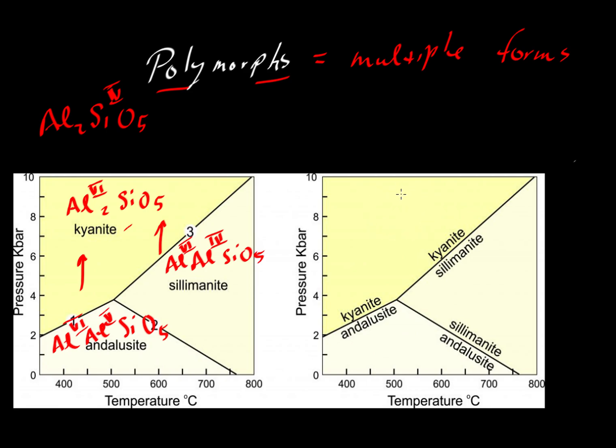We can take advantage of this double-paneled figure from Dexter Perkins' textbook to illustrate something else, and that is an issue of stability. When we talk about polymorphs, which ones are going to be stable?